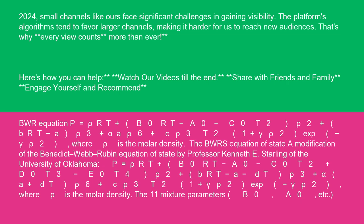The BWRS equation of state, a modification of the Benedict-Webb-Rubin equation of state by Professor Kenneth E. Starling of the University of Oklahoma.